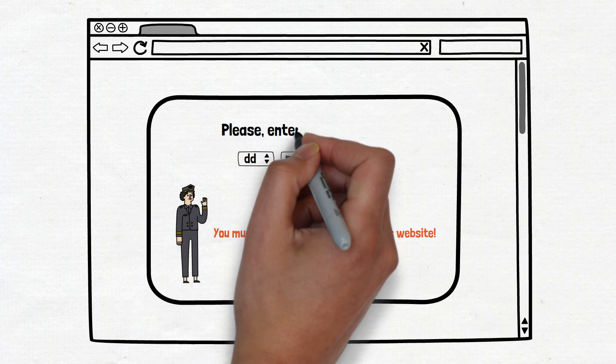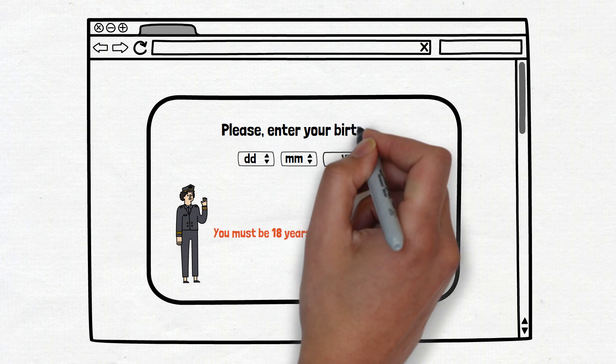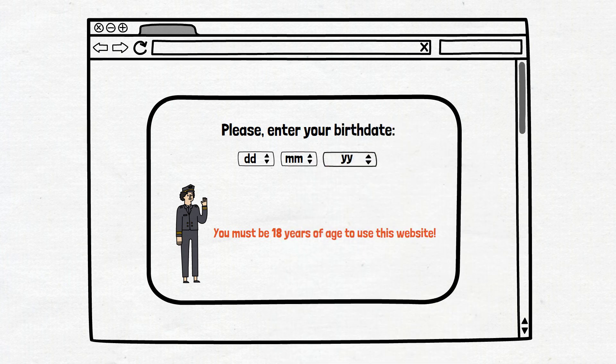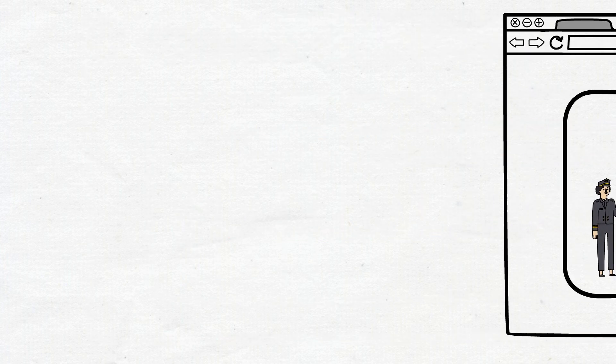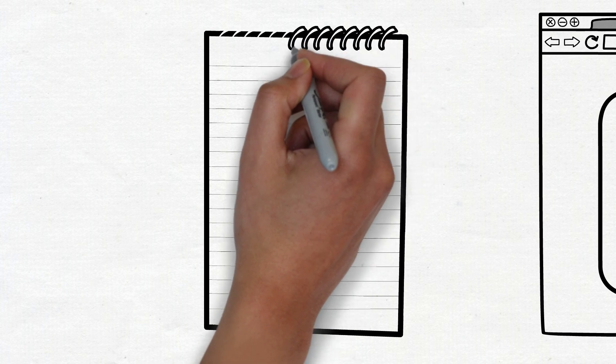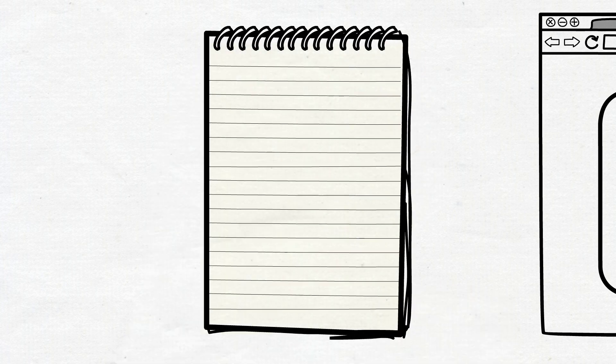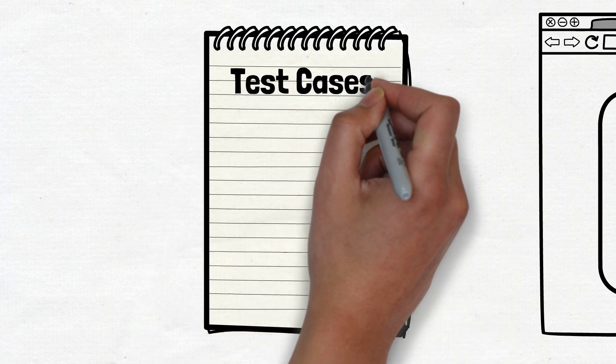Let's say you work on some specific website with age restrictions. The user should enter the birth date before they are allowed to see the content. Now, you can stop the video and think about how would you test it, how many test cases do you need, and how much time it will take. We'll use the old-fashioned notepad for this activity.